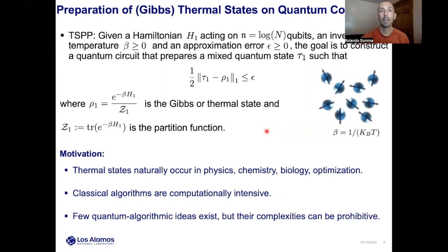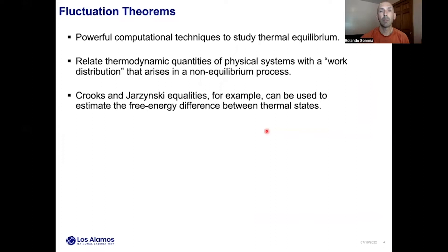While the problem of simulating dynamics of quantum systems has been largely explored in quantum computing, there are only a few quantum algorithmic ideas for simulating thermal equilibrium, and these quantum algorithms have complexities which are prohibitive. Our approach to preparing thermal states is based on the idea of fluctuation theorems — powerful computational techniques to study thermal equilibrium, widely used in statistical physics and statistical mechanics. They relate thermodynamic quantities such as free energy differences to the work distribution that arises in a non-equilibrium process.